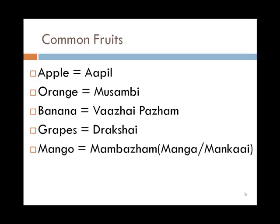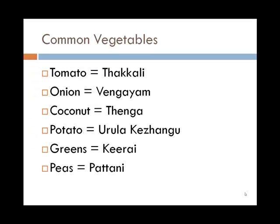Mango is maambaram — that refers to the ripe fruit. If you want to refer to the green mango which is not yet ripe, that is manga or mangai. Common vegetables: tomato is takkali, onion is vengayam, coconut is tenga, potato is urula keranga. Anything that grows under the ground is keranga. Urula means round, so urula keranga refers to the potato.